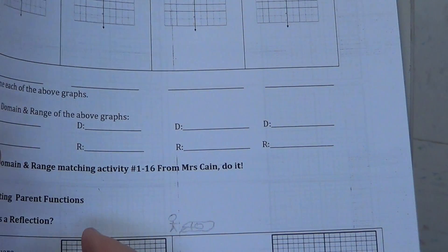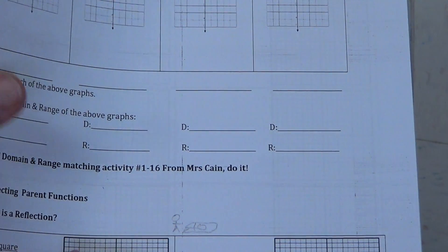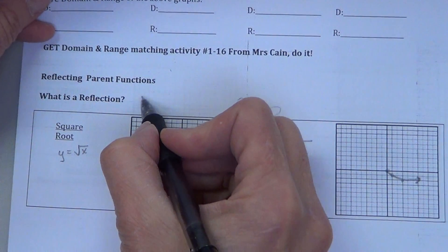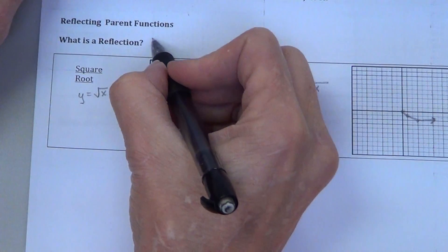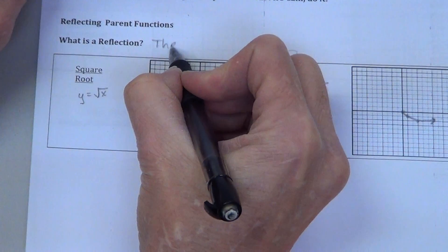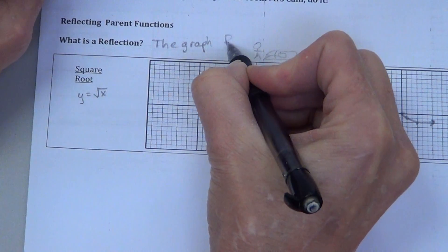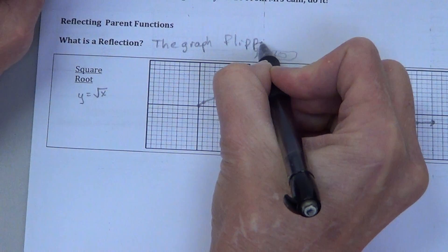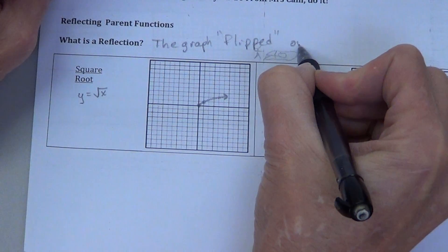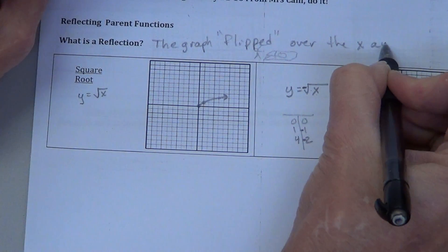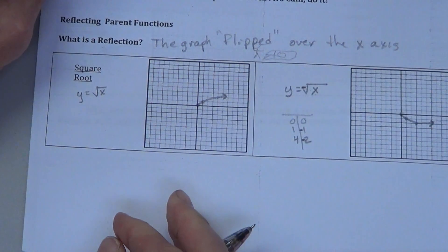So, reflections, just like with the shapes, carry a pattern. So what is a reflection? It is the graph flipped over the x-axis.